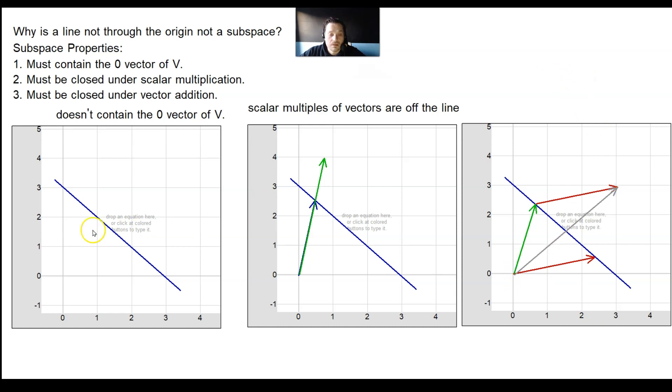Let's just summarize it all. The first issue is, it doesn't contain the origin. Second, it contains a vector, but when you scale it, the vector goes off the line, so it's not closed under scalar multiplication.